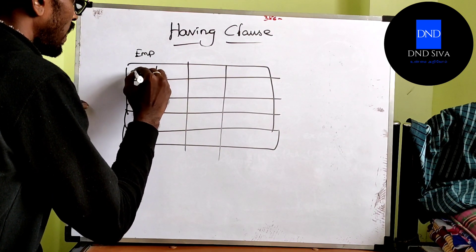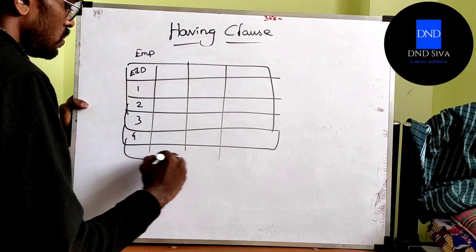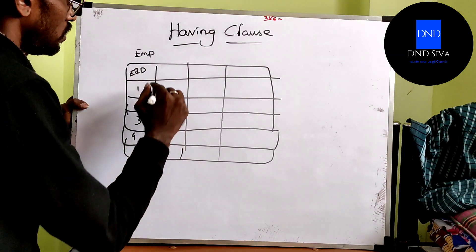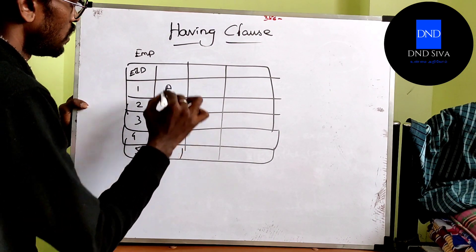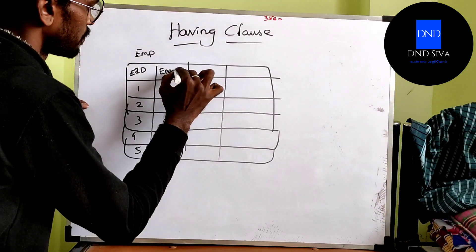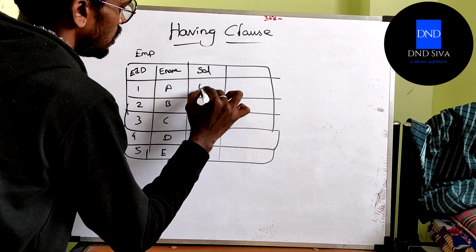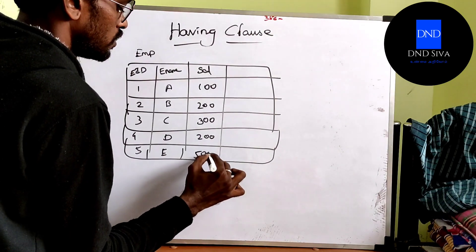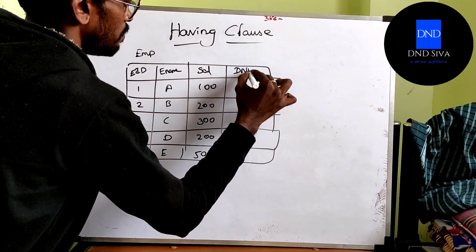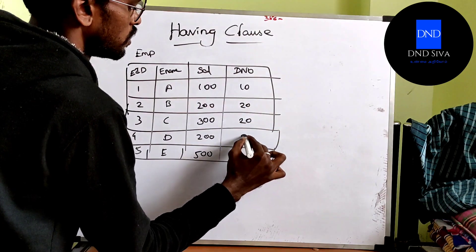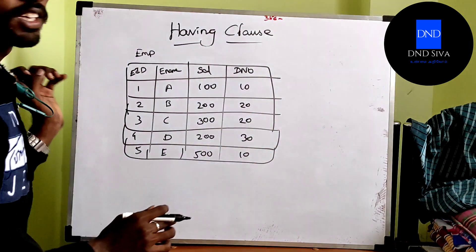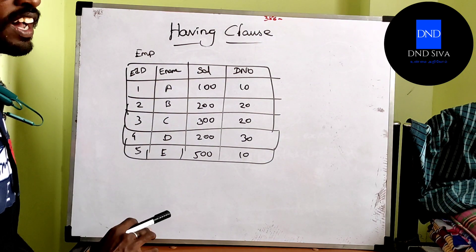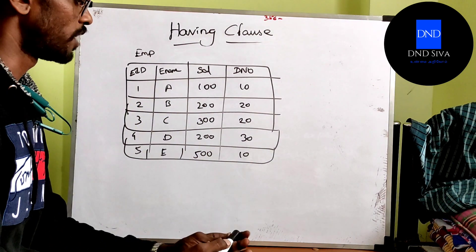Employee table: Employee IDs 1, 2, 3, 4, 5 with names A, B, C, D, E. Salary: 100, 200, 300, 200, 500. Department: 10, 90, 20, 30, 10, 10, 20. Okay, now we have a question in the table — at least two employees will be able to do it.